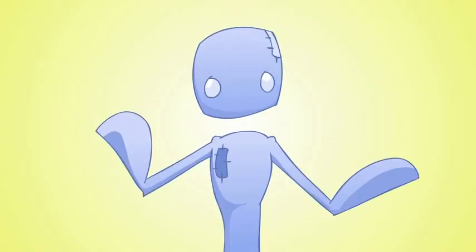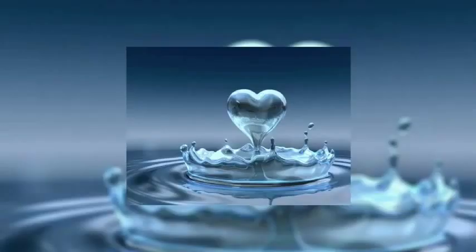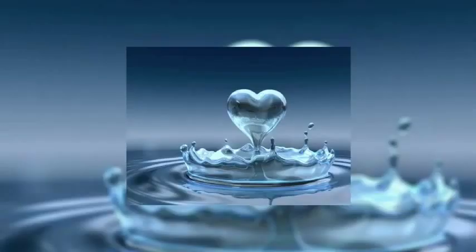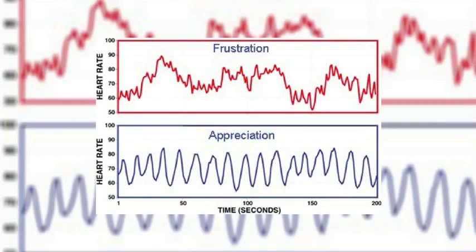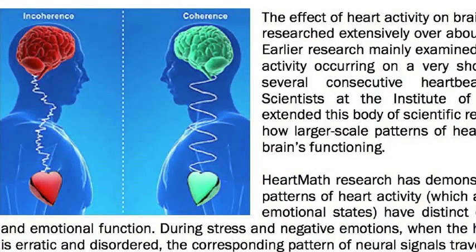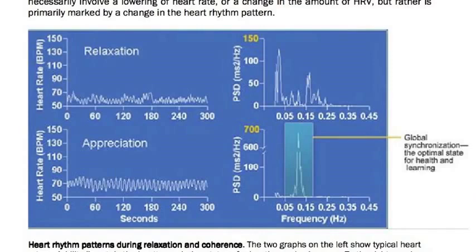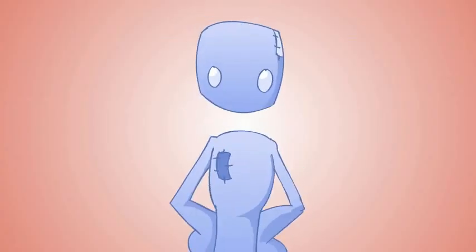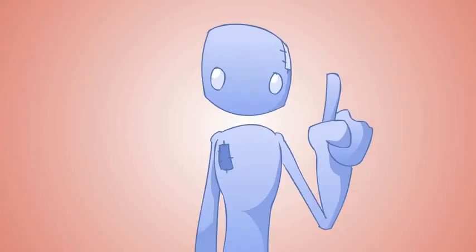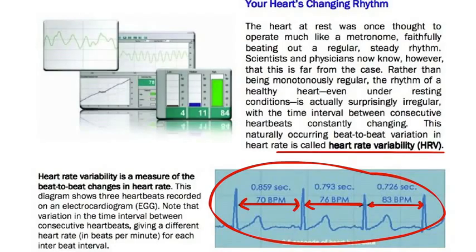We're going to look at the work now of the Institute of HeartMath, which is an organization with over 19 years of research and study on the psychophysiology of stress, emotions, and the interactions between the heart and the brain. The information they have discovered and compiled is revolutionary. On the technical side, the Institute puts a lot of focus into understanding the spaces between the heartbeat, which is called the heart rate variability, or HRV for short.